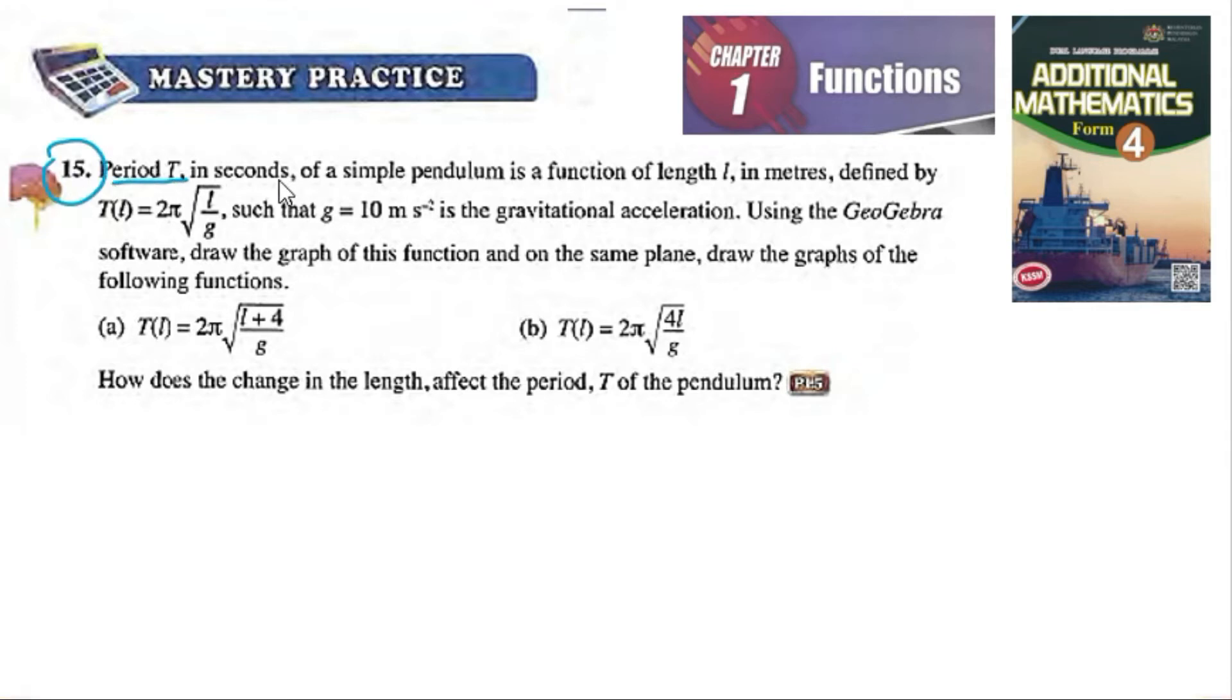Problem 15: The period T in seconds of a simple pendulum is a function of length l in meters, defined by T(l) = 2π√(l/g), where g is the gravitational acceleration.